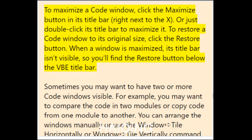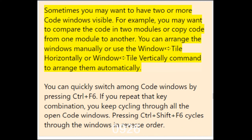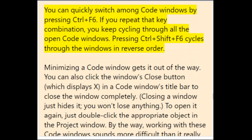To maximize a code window, click the Maximize button in its title bar, or double-click the title bar. To restore it, click the Restore button. Sometimes you may want two or more code windows visible — for example, to compare code in two modules or copy code from one to another. You can arrange them manually or use Window > Tile Horizontally or Window > Tile Vertically. Switch among code windows by pressing Ctrl+F6, and cycle in reverse with Ctrl+Shift+F6.